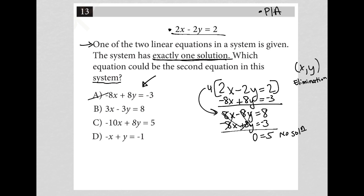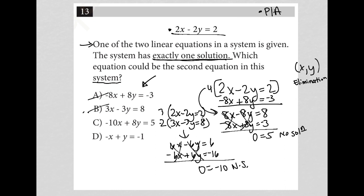I can do the exact same thing for choice B. 2x minus 2y equals 2 and 3x minus 3y equals 8. Here I'd multiply the top by 3 and the bottom by maybe negative 2. Therefore I would get 6x minus 6y equals 6 and negative 6x plus 6y equals negative 16. You probably already noticed the same exact thing happens here: both x and y are gone and I'm left with 0 equals negative 10, which again is no solution. So B is gone.